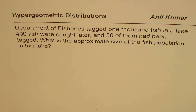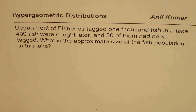I am Manal Kumar. We have an excellent example on hypergeometric distribution. Department of Fisheries tagged 1,000 fish in a lake. 400 fish were caught later and 50 of them had been tagged. What is the approximate size of the fish population in this lake?